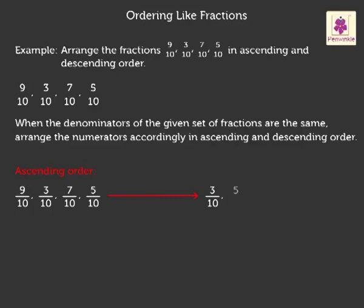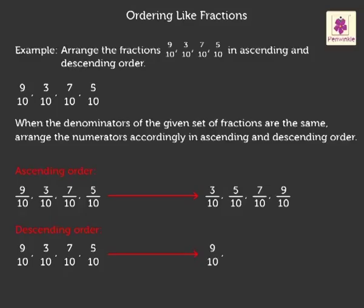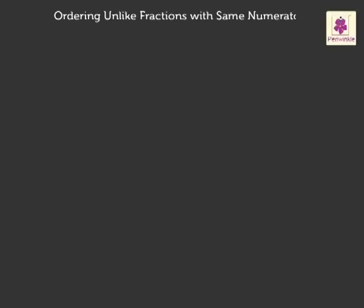The ascending order is: 3 upon 10, 5 upon 10, 7 upon 10, and 9 upon 10. Now we arrange the numerators in descending order to get the fractions in descending order as: 9 upon 10, 7 upon 10, 5 upon 10, and 3 upon 10.